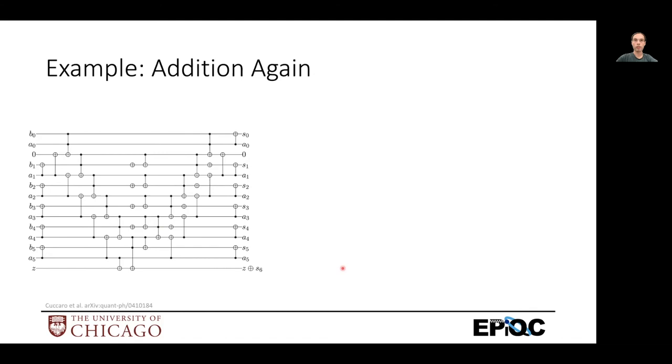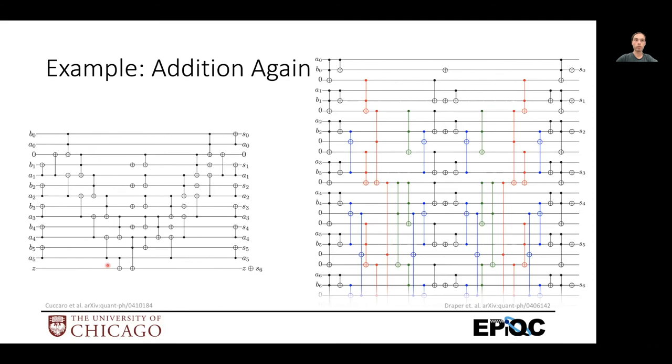And here's the addition again, where you can see the same mirror structure in both of these, but it's actually doing more arithmetic in this uncomputation half in uncomputing. So it's putting the register A back to the way it was, but leaving S with the sum.